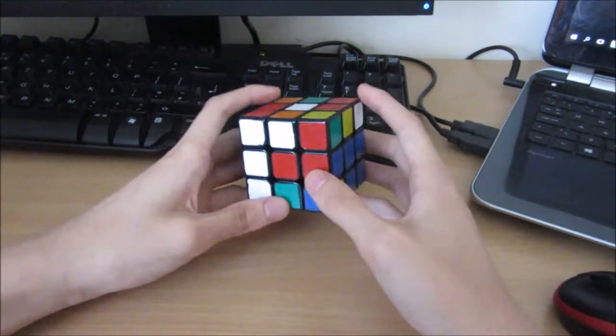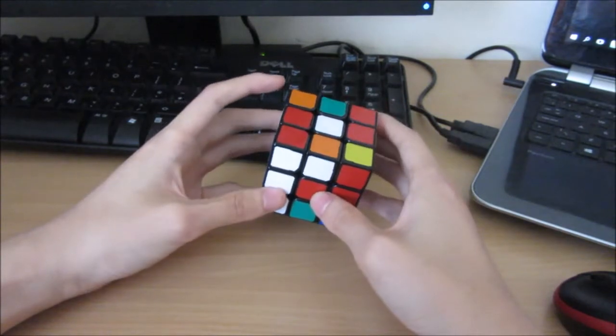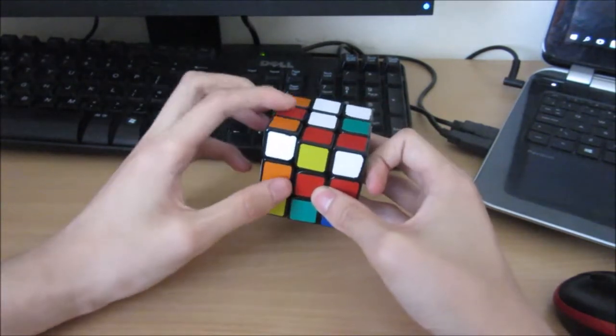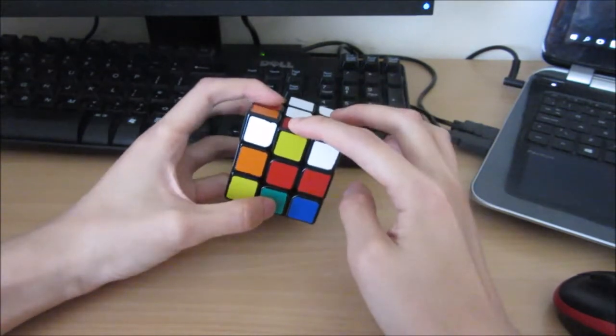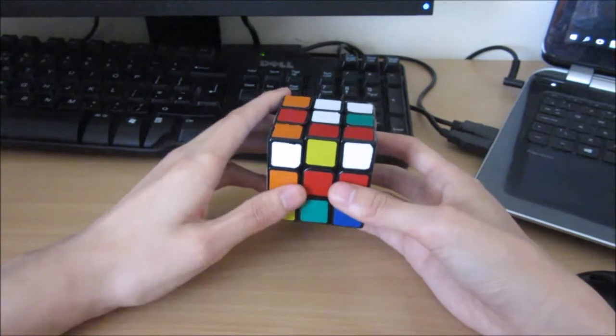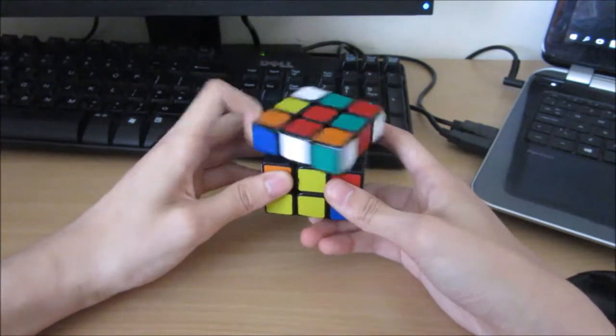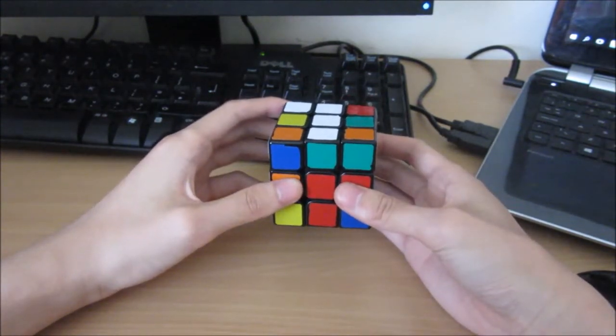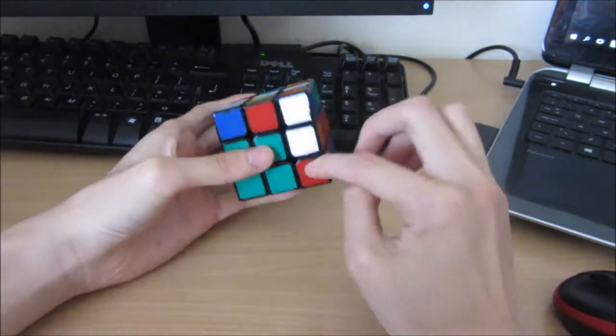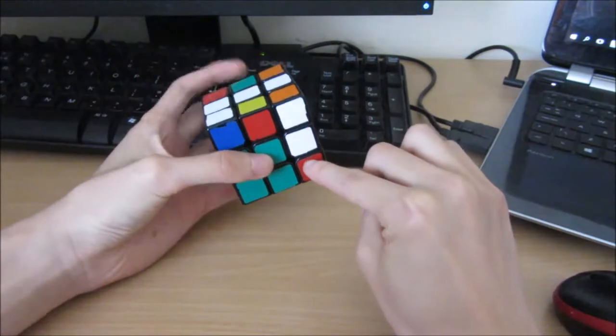Alright, so we've got six bad edges. This is the only good one. So in this case, I would flip these two. And then there's four bad edges in the sort of arrow position. So I just do M U' M'. Sorry, M' U' M. Okay.